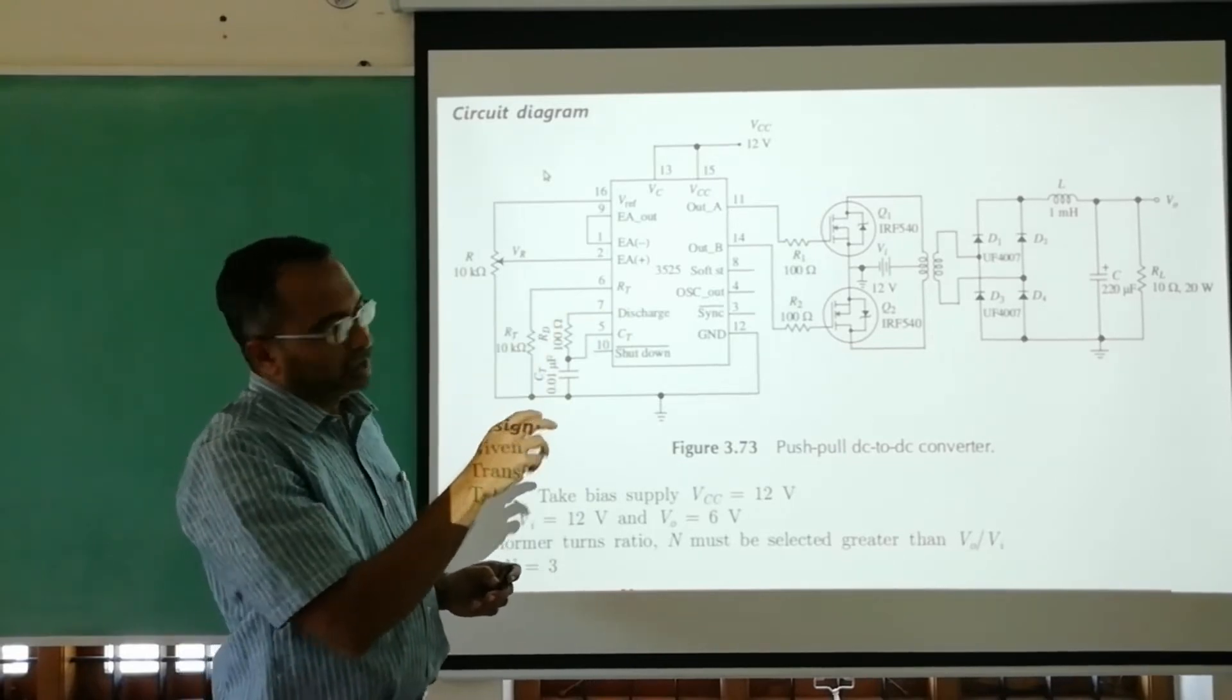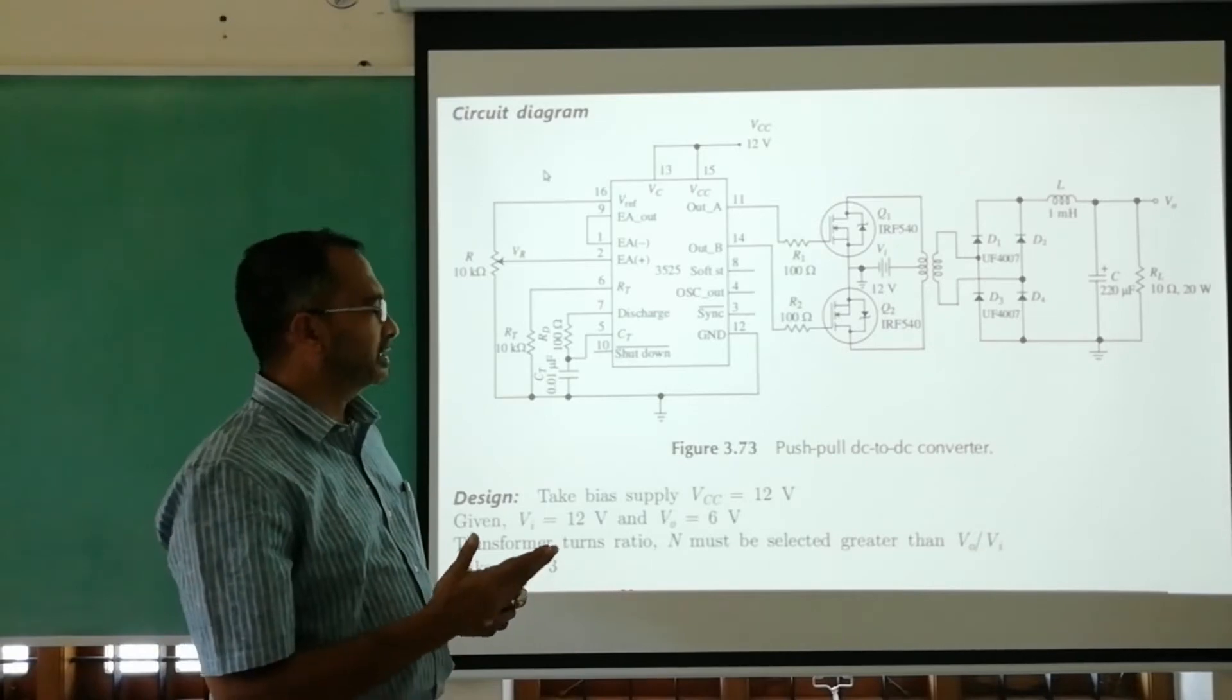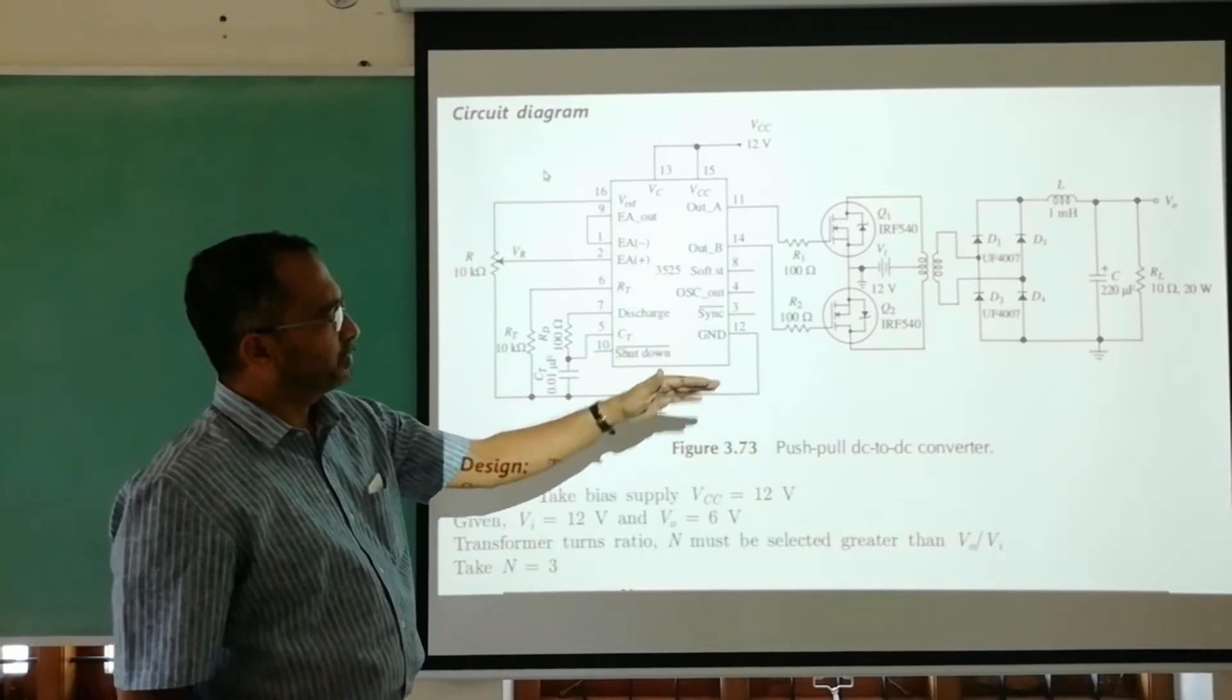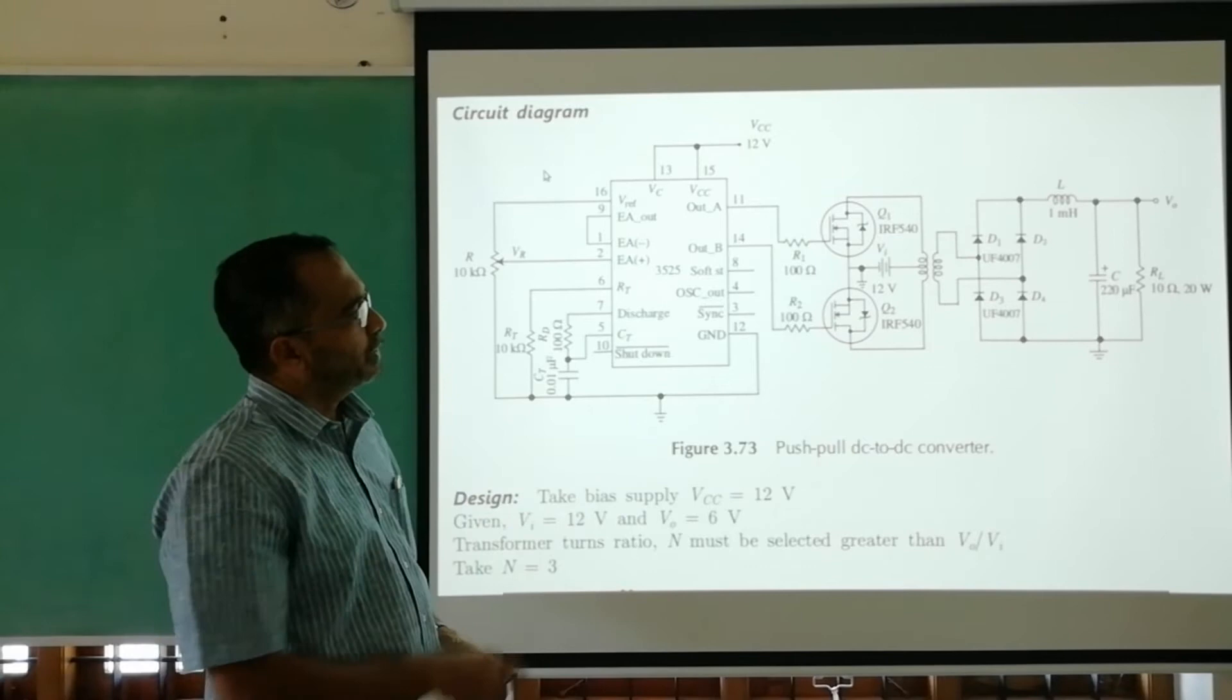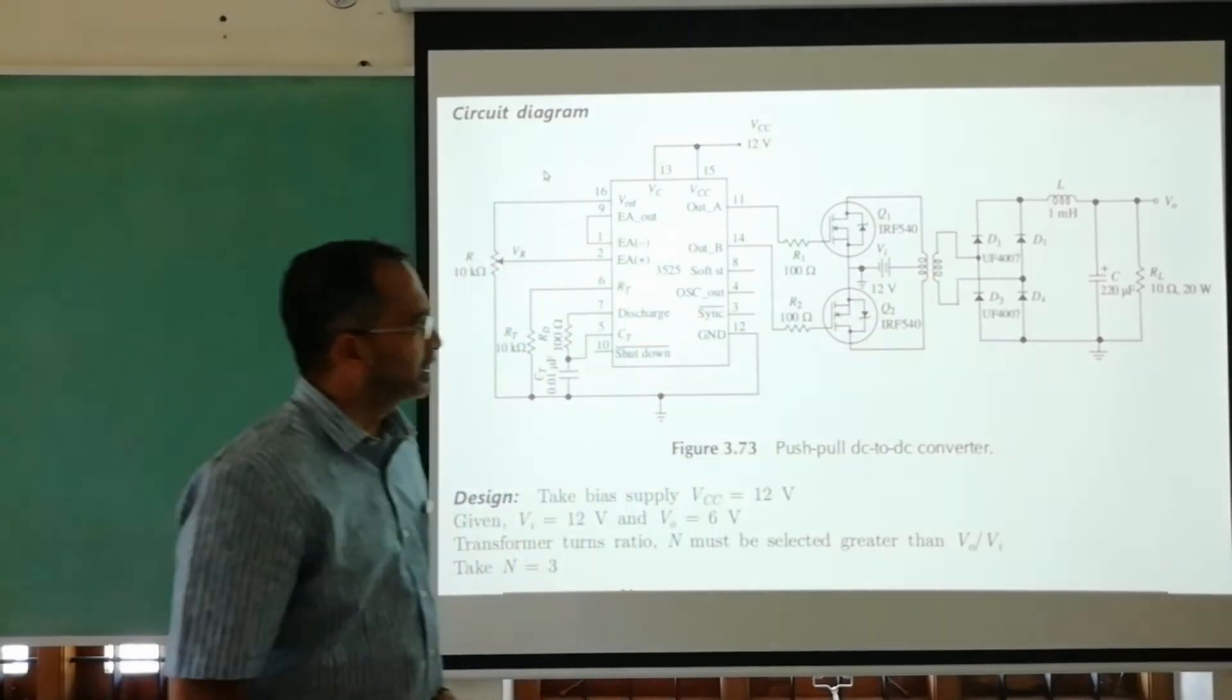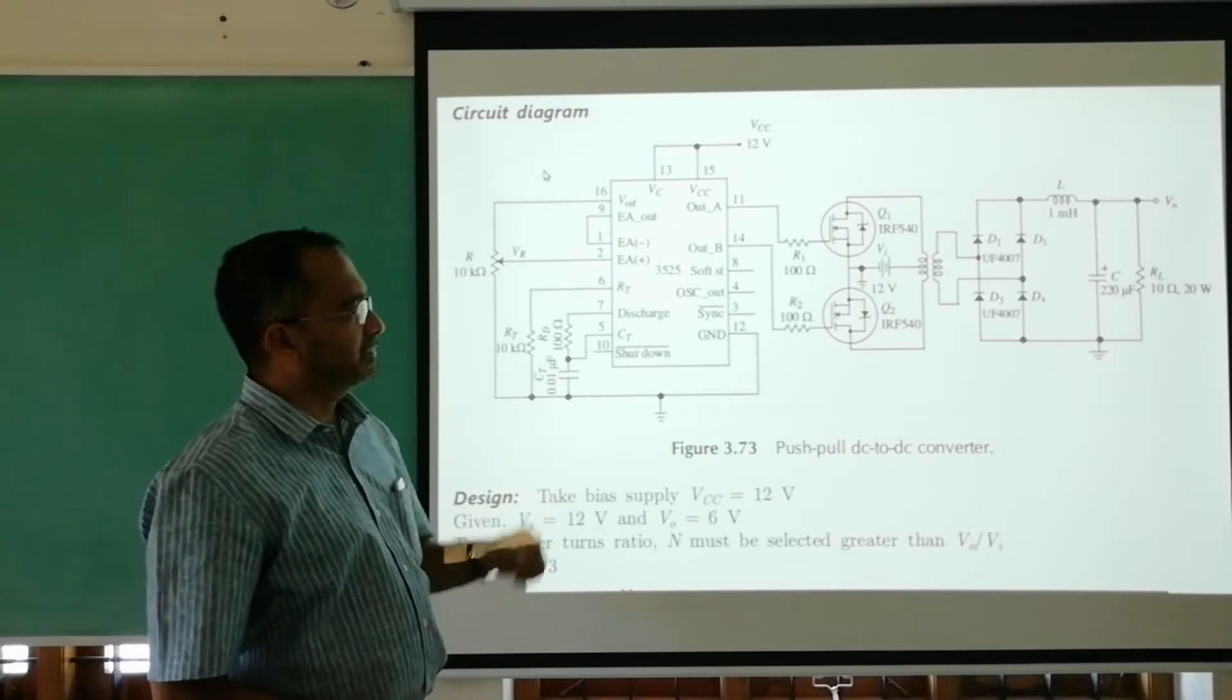Instead of taking it to 2, we take it to 3. So the secondary ratio is 12 by 6. We took 1:1:3 instead of 2. It's 1 here, 1 here, and 3 in order to compensate for any losses happening in the rectifier side.